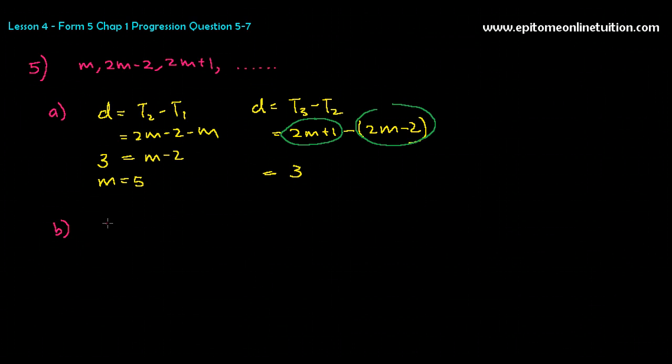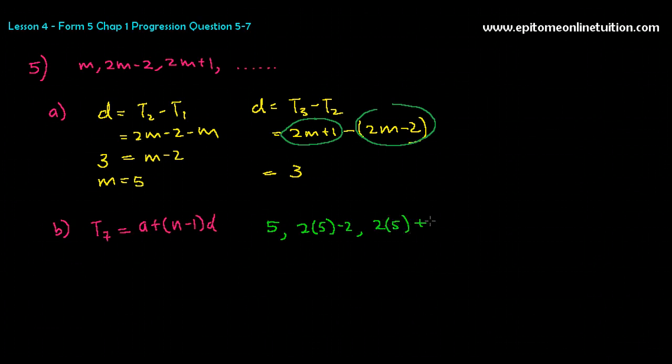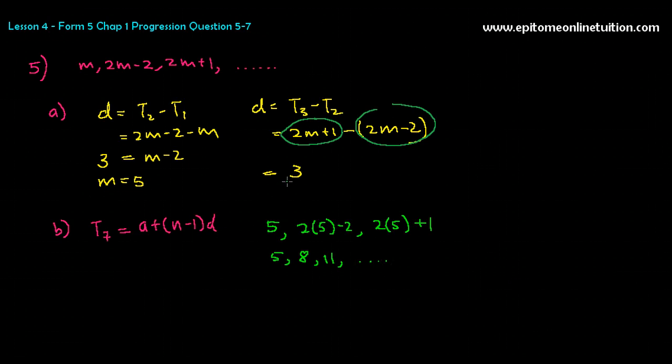Find the value of the seventh term of the progression. That means you're looking for T7. Equals to A plus N minus 1D. So now the A, you have to find the A. So what you have to do is to substitute your M. You found your M. Substitute your M into the progression here. So let's write the progression. M is 5. 2M minus 2 would be 2 times 5 minus 2, and that would be 2 times 5 plus 1. So your progression is 5, 8, 11, and so forth. Since your D is 3. So now you can substitute this in. So that's 5 plus 18, and that gives you 23, so T7 has the value of 23, and that is number 5.